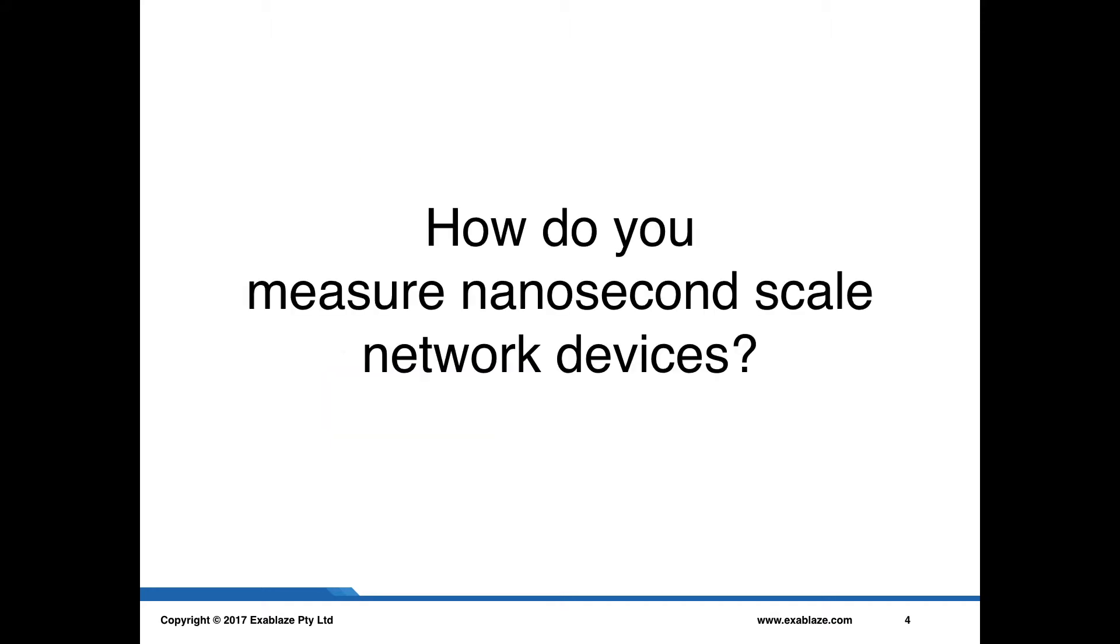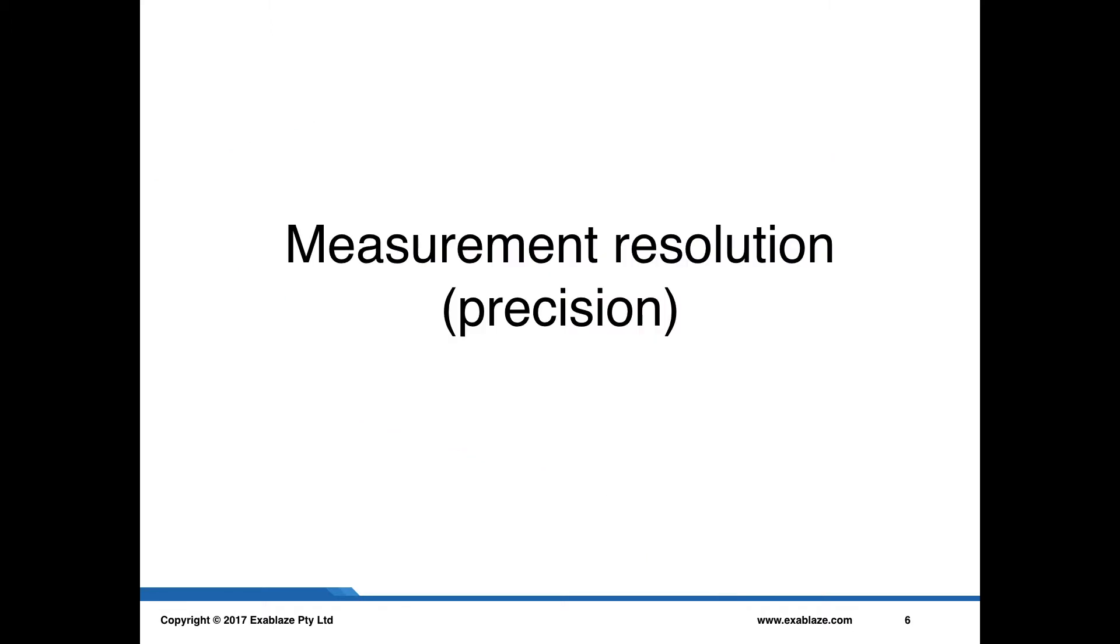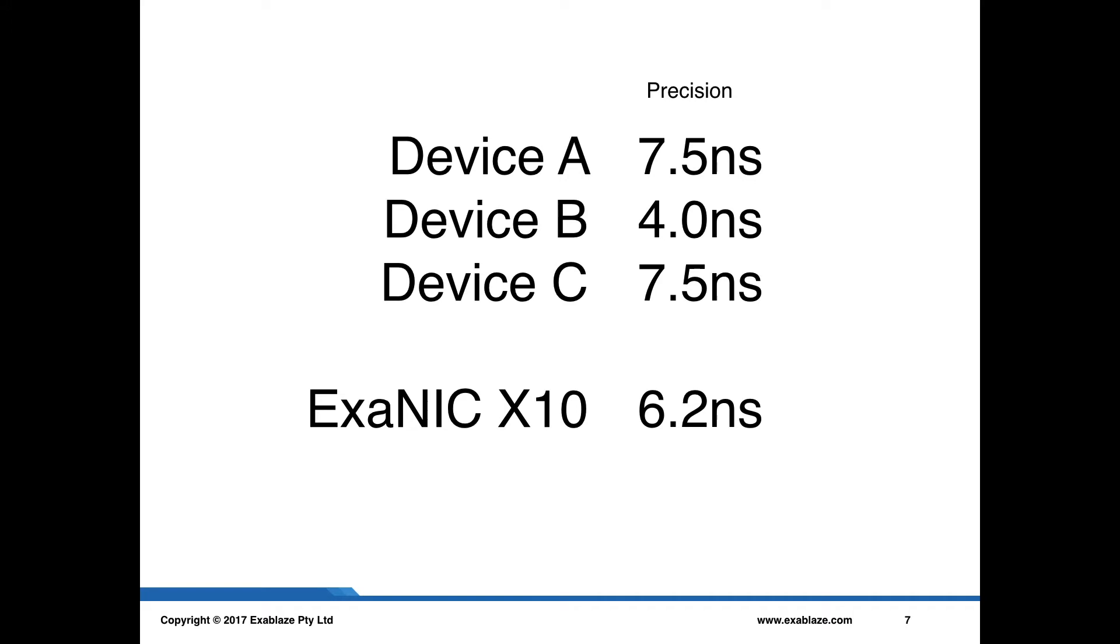The essential question that we're trying to answer here is, how do you measure nanosecond scale network devices? The obvious answer is to use some sort of a network capture device. When you buy a network capture device, the manufacturers will usually quote the measurement resolution or precision. What we have in the lab here is a collection of devices by a range of well-known manufacturers, and you can see that the measurement precision is in the region of about 10 nanoseconds. The Exablaze device, the ExaNIC X10, has a resolution of 6.2 nanoseconds.